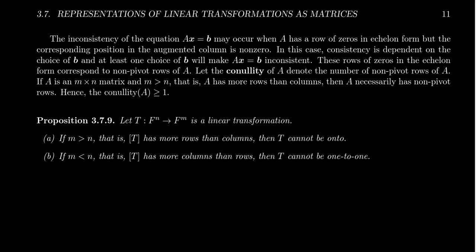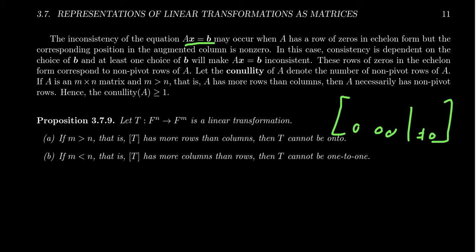To summarize: the inconsistency of the equation Ax = b may occur when A has a row of zeros in echelon form but the corresponding position in the augmented column is non-zero — like when you have a row of zeros and then something non-zero on the right, giving a contradiction and an inconsistent system. Consistency is dependent on the choice of b; at least one choice of b will make Ax = b inconsistent. So if A has a row of zeros in its echelon form, the corresponding transformation won't be onto — you can find some vector b that it'll miss.